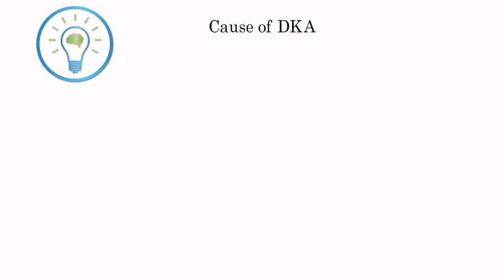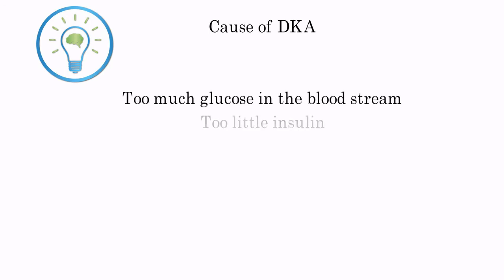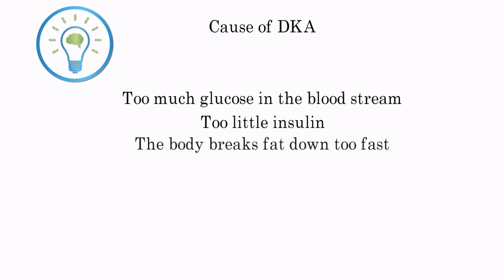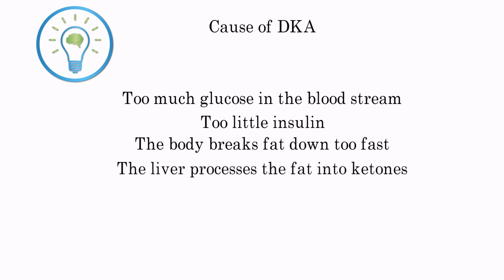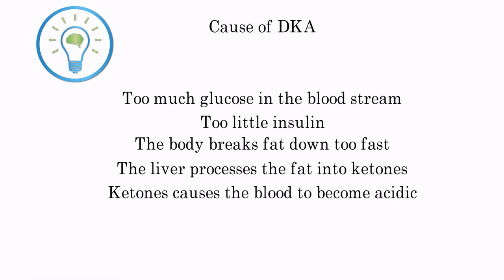The onset of DKA happens as a result of high blood sugar and not enough insulin. The body starts breaking down fat at a rate that is much too fast. The liver processes the fat into a fuel called ketones, which causes the blood to become acidic.